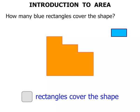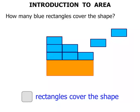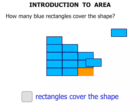Again, let's start moving them across. 1, 2, 3, 4, 5, 6, 7, 8, 9, 10, 11, 12. So 12 rectangles cover the shape.